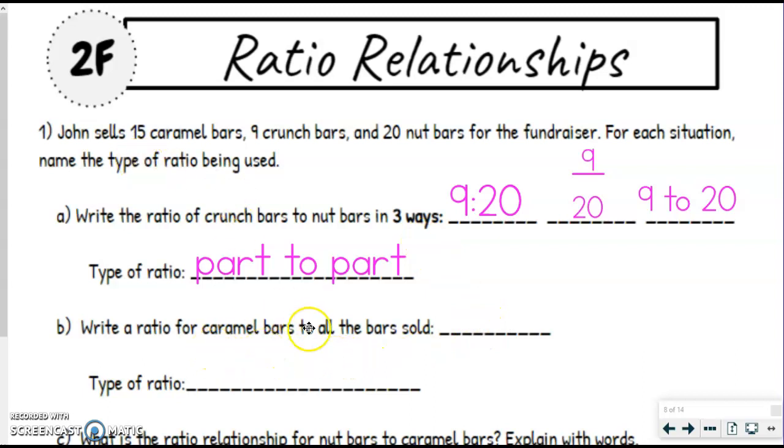But anyways, we got caramel bars is 15, and it wants all the bars sold. So we need to add up all the bars. So I'm going to add the 15 and the 20 together first, because that's just a little bit easier math. So it's going to be 35 plus nine more. So even though we're comparing to the caramel bars, we still have to include them in the total. We can't exclude them.